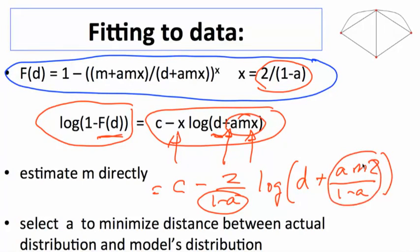So what we'll do is search over a's. We'll search over a's until we minimize the distance between the distribution, degree distribution generated by this particular a, and the actual degree distribution. We'll try and select an a to minimize that distance between the actual distribution and the model's distribution.